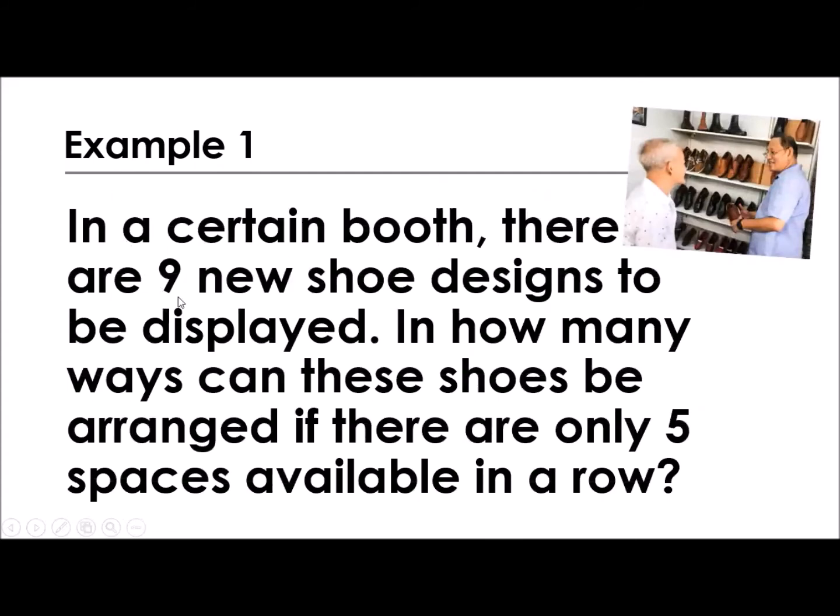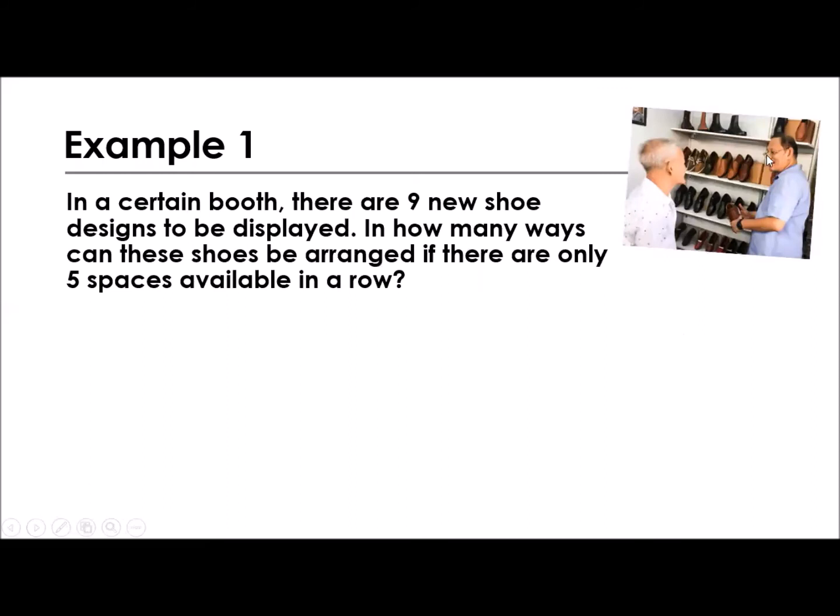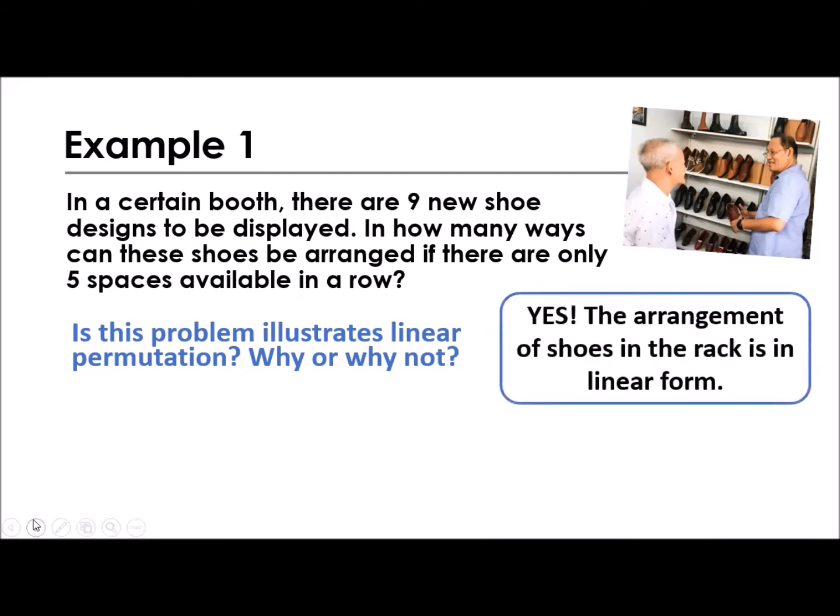Why does it become permutation? Let's have this problem. In a certain booth, there are 9 new shoe designs to be displayed. In how many ways can these shoes be arranged if there are only 5 spaces available in a row? So let's have these guide questions. As you can notice on the picture, this is Mayor Marcy, credits to him. And this man is one of the shoemakers. Now, is this problem illustrating linear permutation? Why or why not? Is there order in displaying the shoes? The answer here is yes. The arrangement of shoes in the rack is in linear form. And they should be in pairs, right? So that is in proper order.